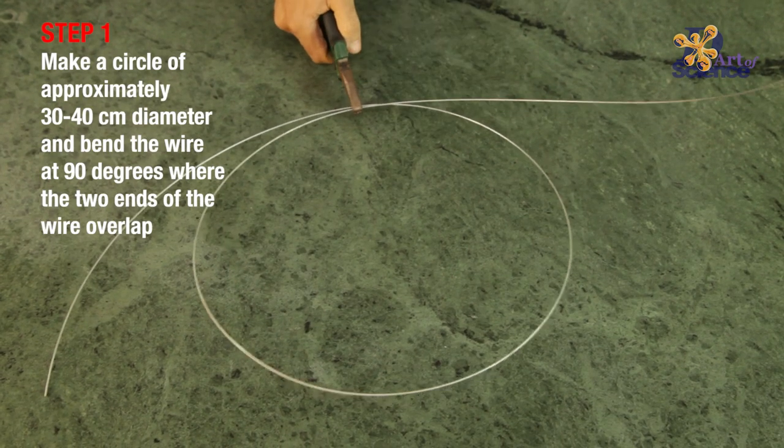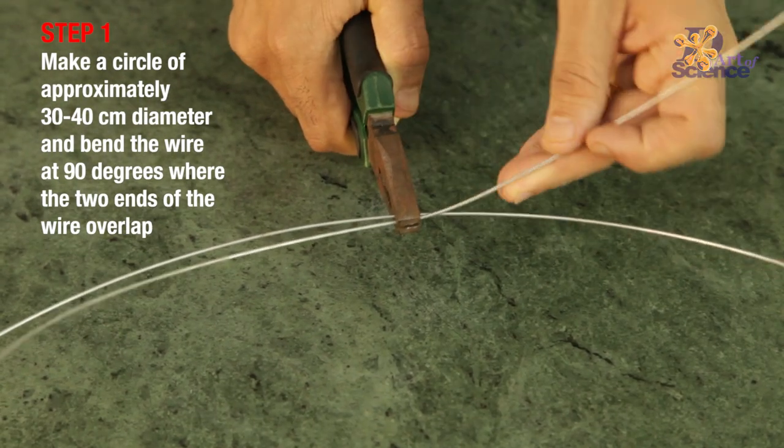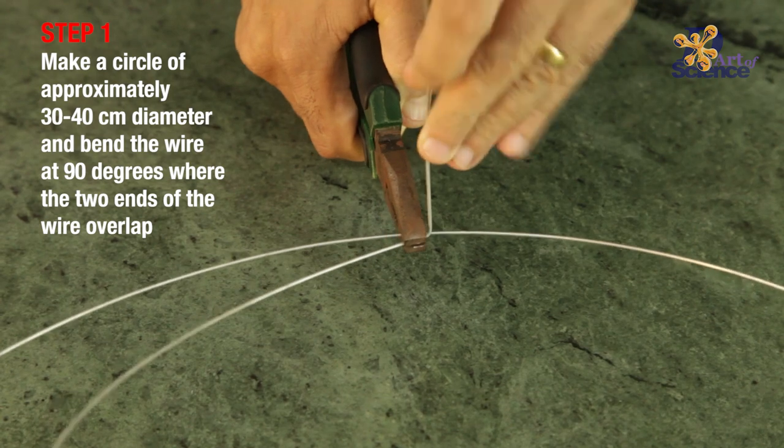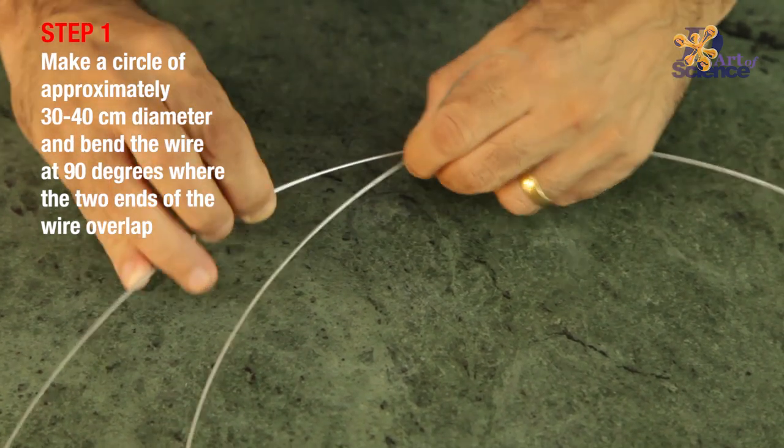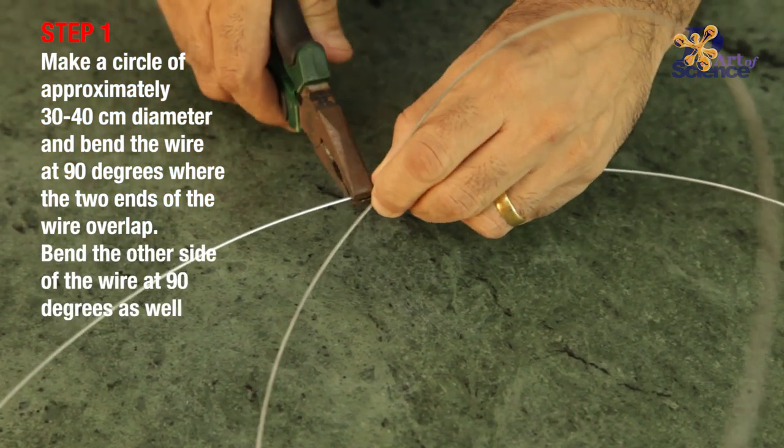Now make a diameter of around 30-40 cm as shown, and where they meet, bend it to 90 degrees as shown, such that you can bend both sides, and both sides should be fairly equal.